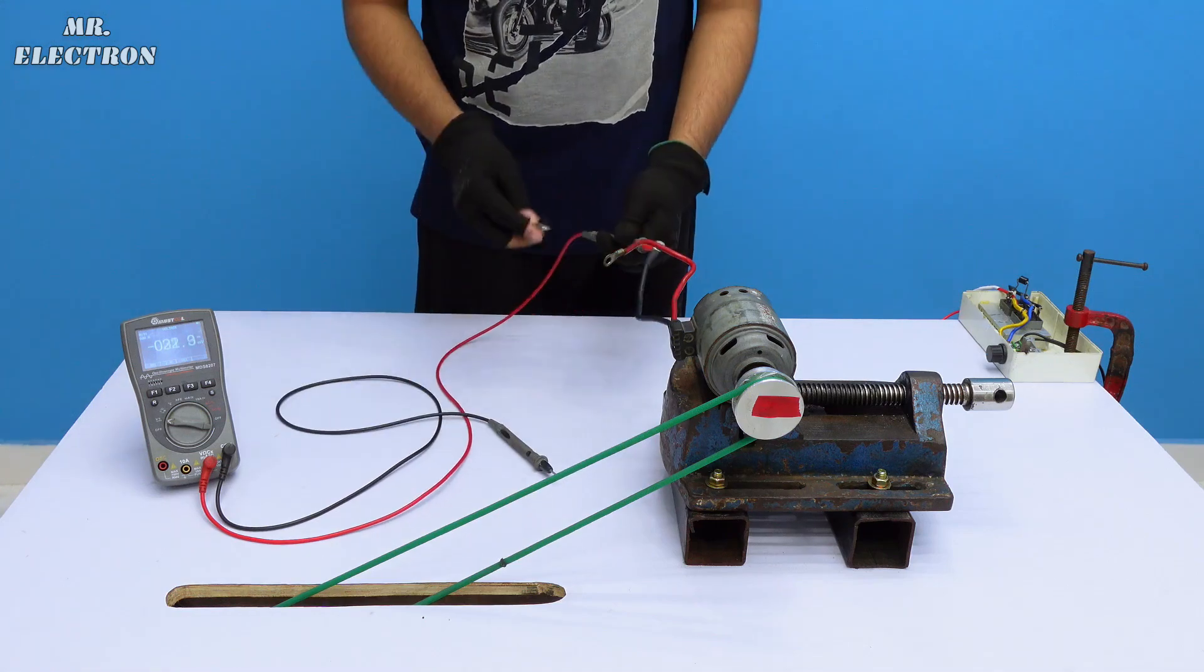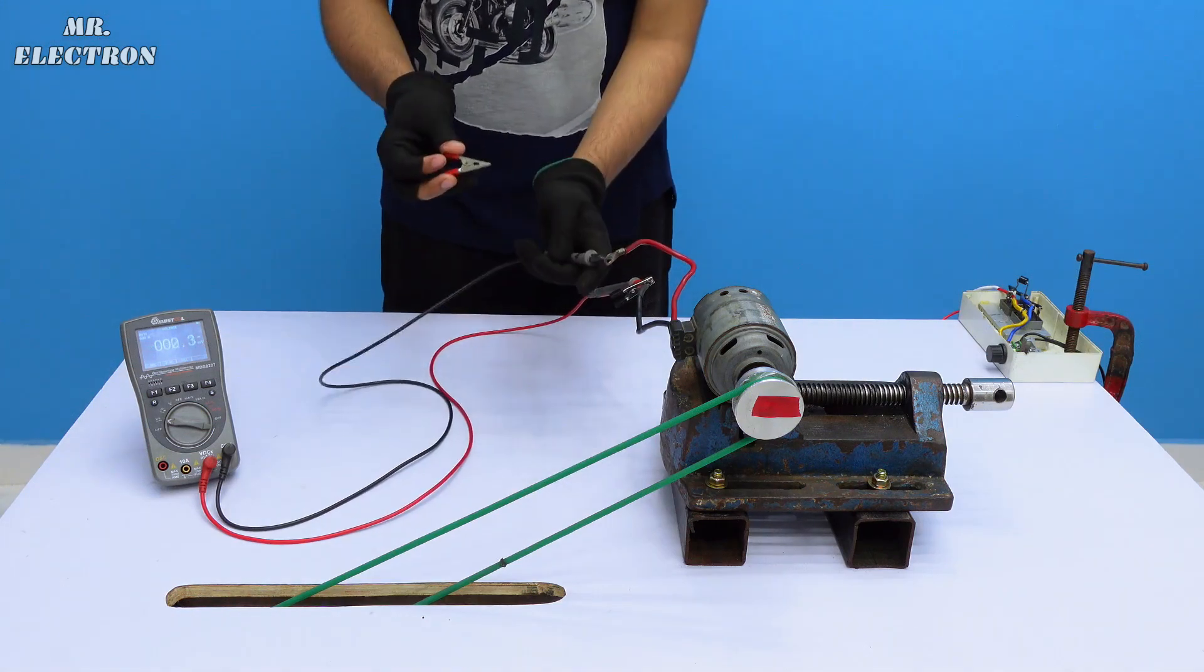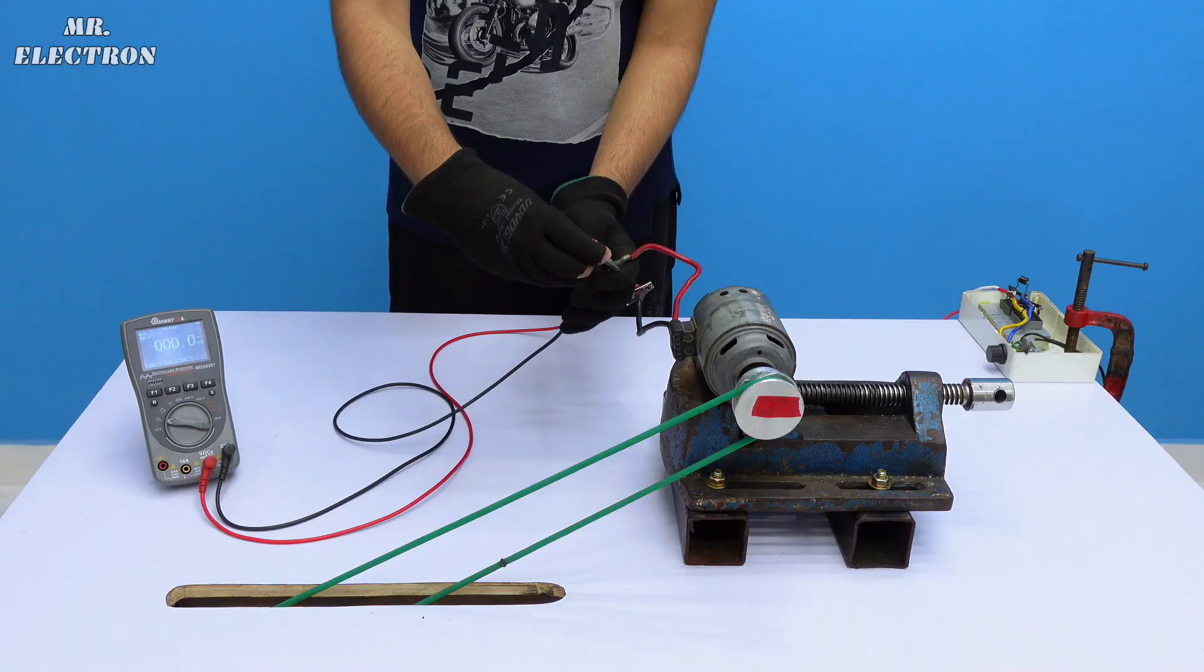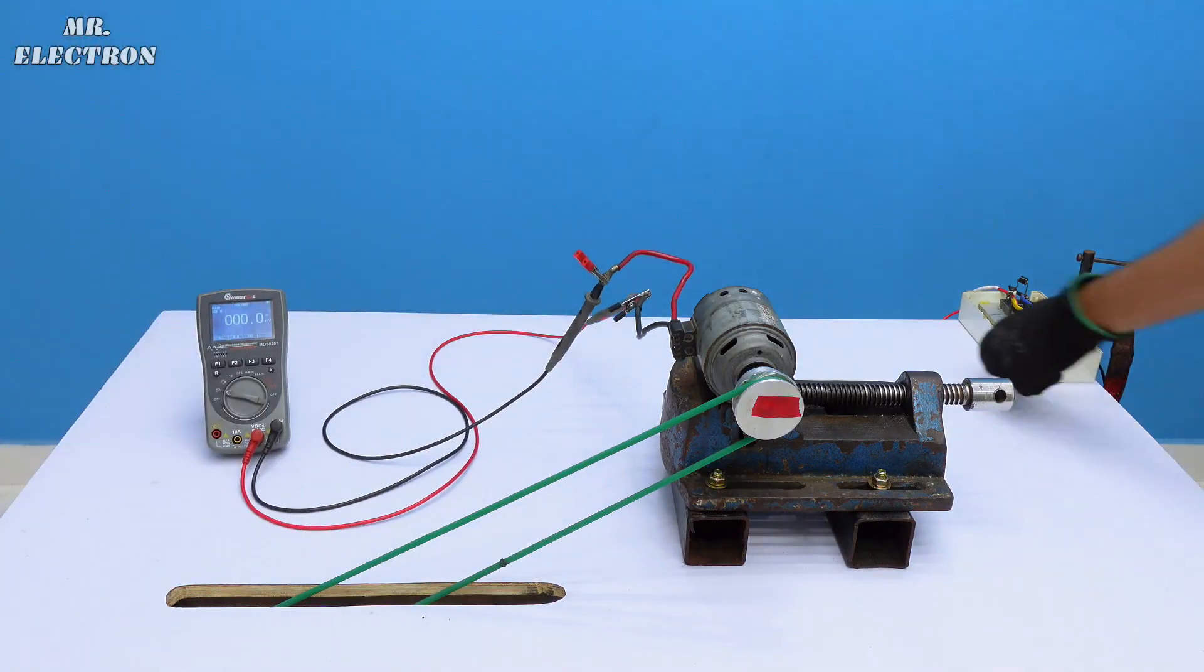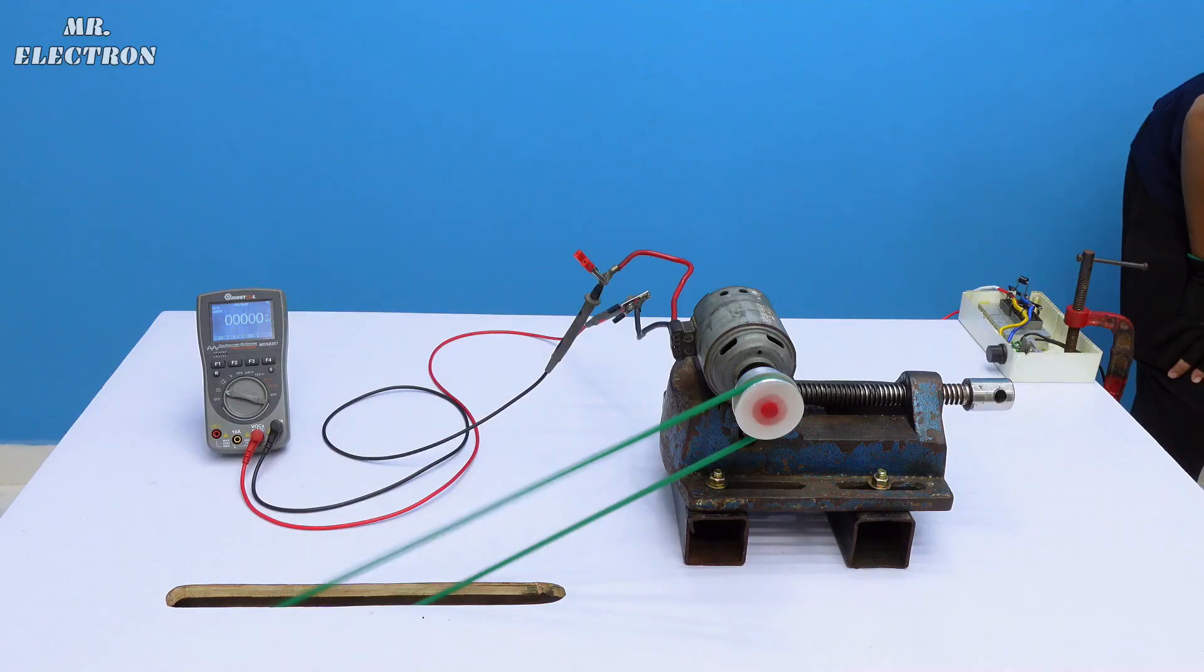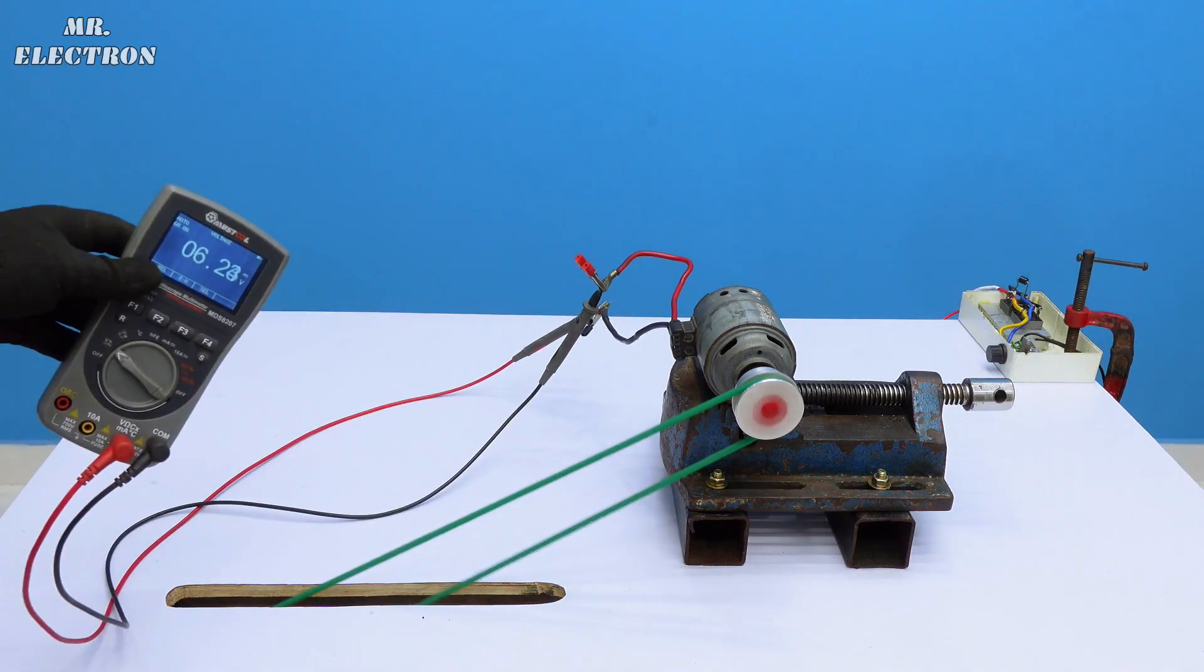Before turning the setup on, let's do the connections of the multimeter to check the generated voltage and accordingly set the speed of the motor. Let's turn it on. Here we have a generated voltage of 6V.